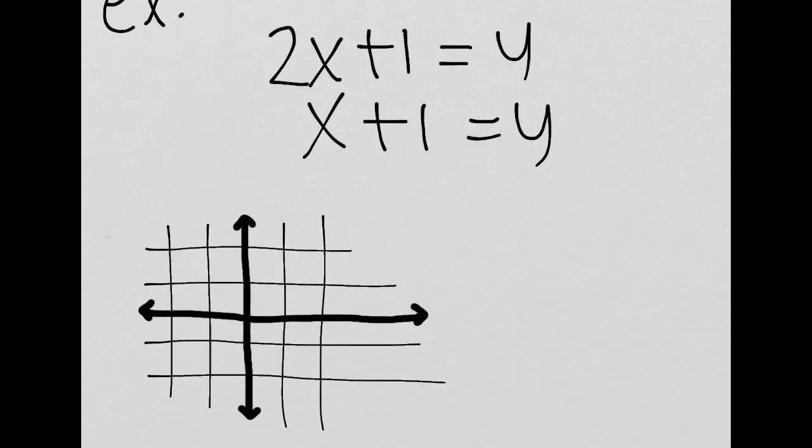So let's look at an example to make sense of this. We have 2x plus 1 equals y and x plus 1 equals y.